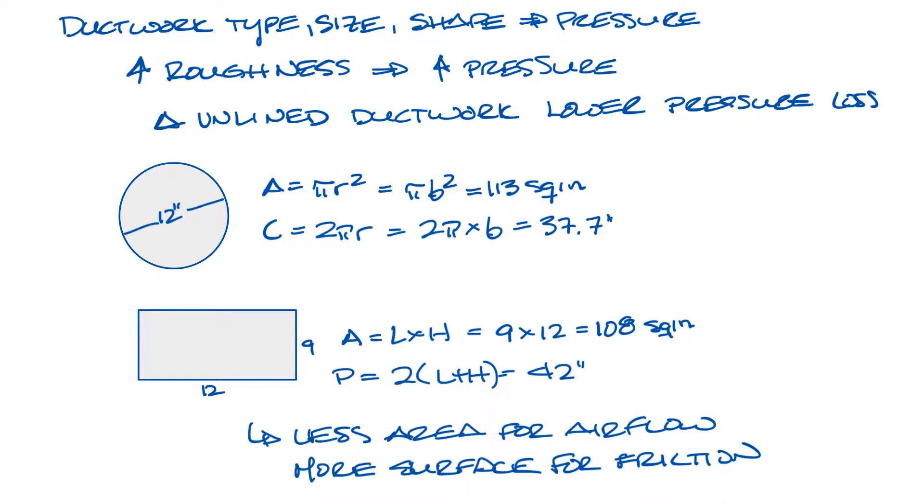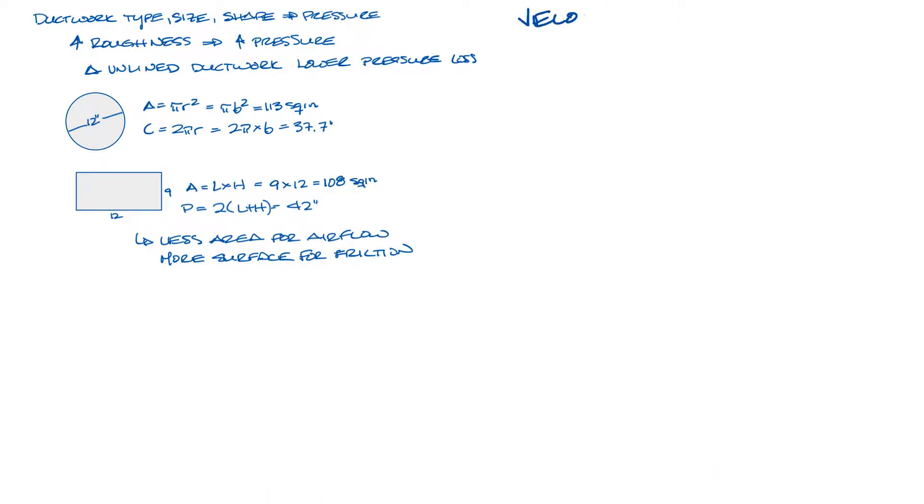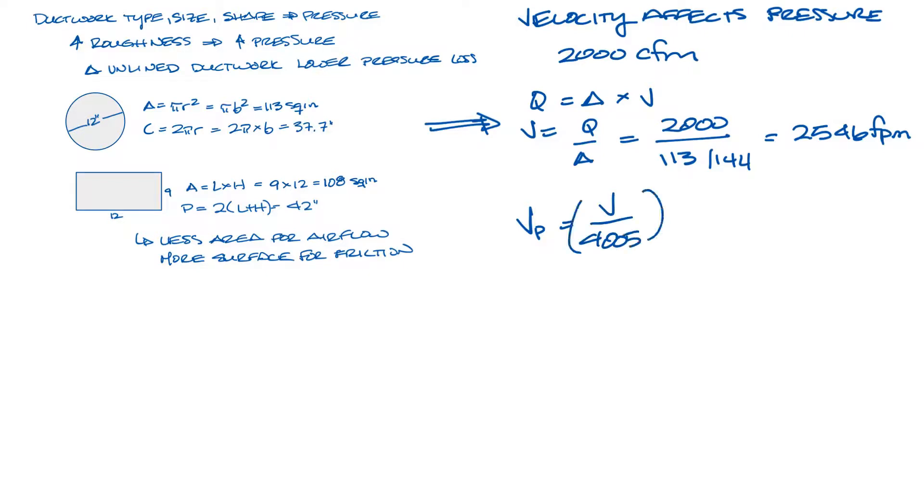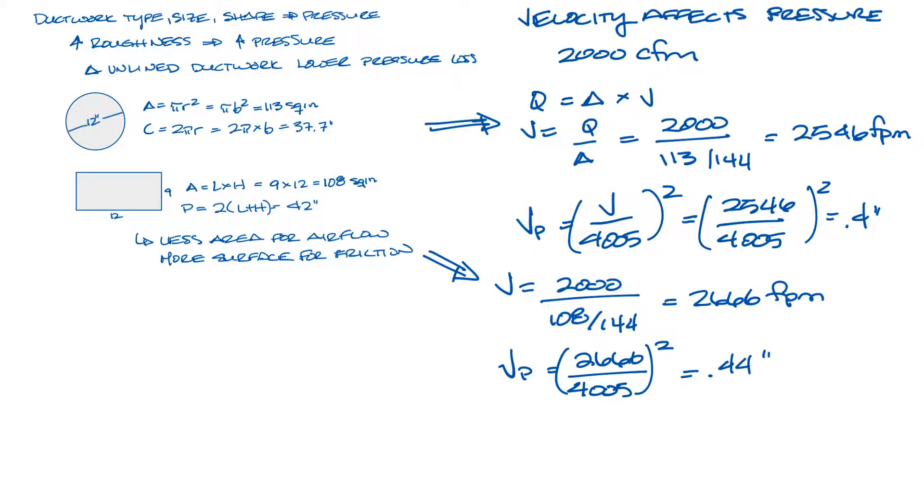The velocity of the air as it passes through the ductwork affects the pressure drop as well. So let's say we have 2,000 CFM. So q equals the area times the velocity, so velocity equals the CFM over the area. So in our circle, we're looking at 2,000 divided by 113.24 to get it into feet, comes up with 2546 feet per minute. That equates to a velocity pressure, using the velocity pressure equation, of 0.4, which is velocity pressure is the square of velocity divided by 4005, equals 0.4 inches. For the rectangle, the velocity will equal 2,000 divided by 108 divided by 144, which is 2666 feet per minute. And then we can calculate the velocity pressure of that to about 0.44 inches, which is about 10% higher than in the round duct.